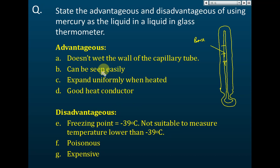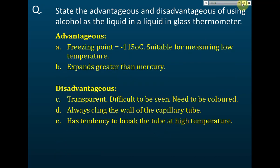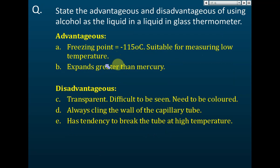For alcohol, the advantages include a freezing point of -115°C, which is much lower than mercury, making it suitable for measuring low temperatures such as in the Arctic and Antarctic. Alcohol also expands more than mercury for a small change in temperature, which can increase the accuracy and sensitivity of the thermometer.